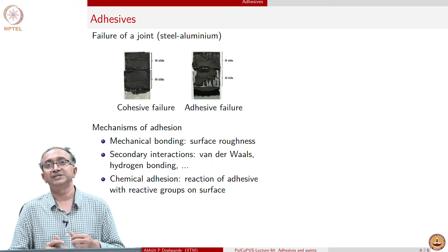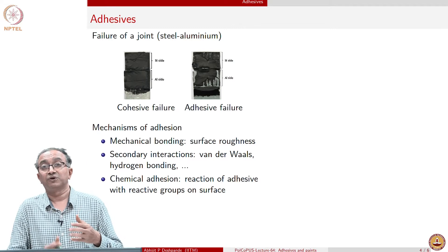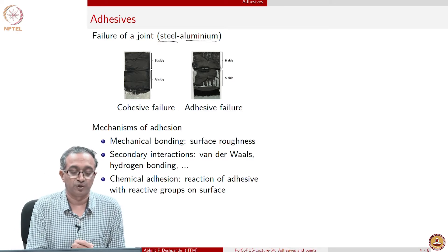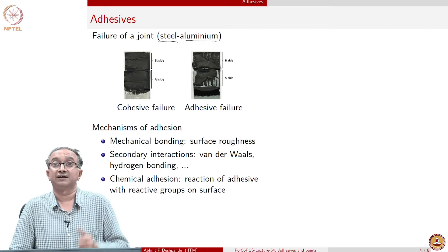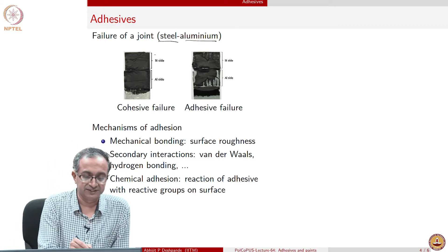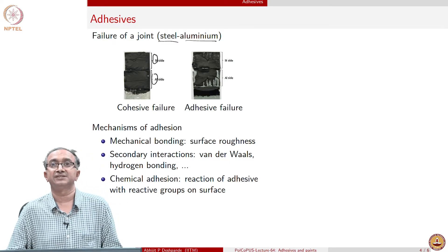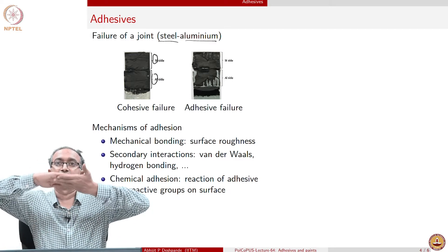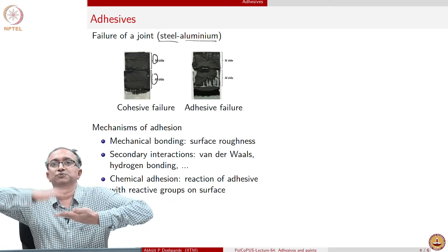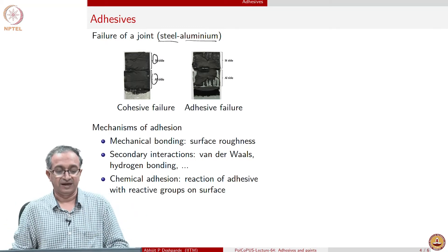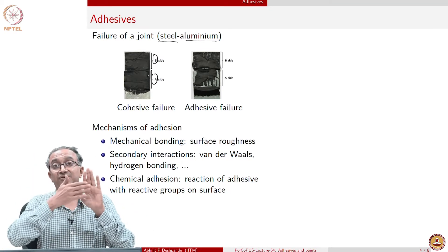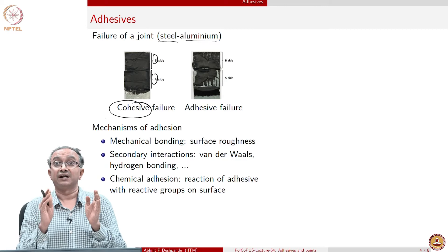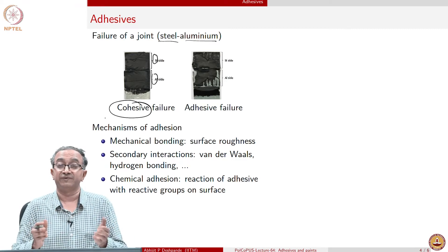The key thing related to these adhesives is that when bonding two surfaces, here for example there is a steel and aluminum joint bonded using a black-looking polyurethane adhesive. You can see the steel side and the aluminum side. What has been done is you take steel and aluminum, put the adhesive in between, make a bond, and then pull it apart to see how it fails. If there is a lot of adhesive on both surfaces, then you have a cohesive failure — the adhesion was good but the adhesive itself failed, so the joint failed.